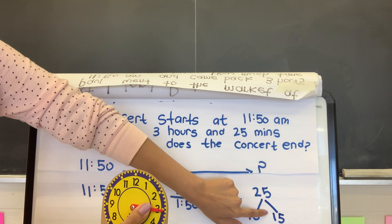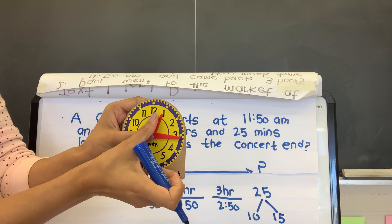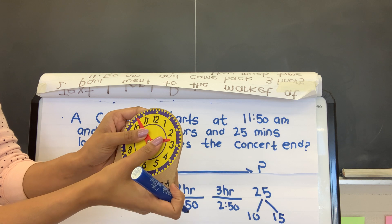So I divided up my 25 minutes into 10 and 15. This was to help me that I need to change my hour as well. Otherwise, what would I do? I may confuse myself, and I would say, oh, the concert ended at, let's say, 2:50, and I would keep on counting.